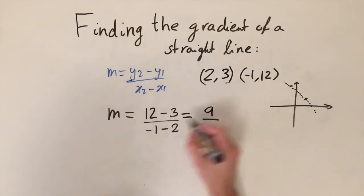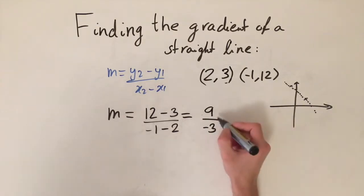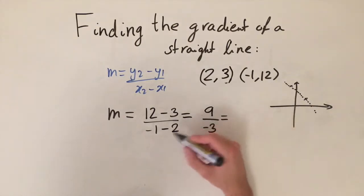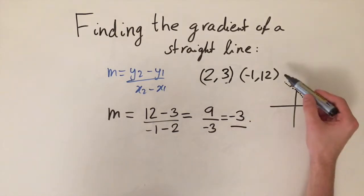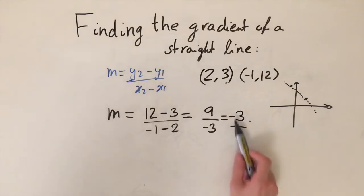And then we just have to simplify this. So 12 minus 3, that's 9, minus 1 minus 2 is minus 3. So if we simplify this, we get the gradient is equal to minus 3, and that is how steep the line goes down in this case because it's negative.